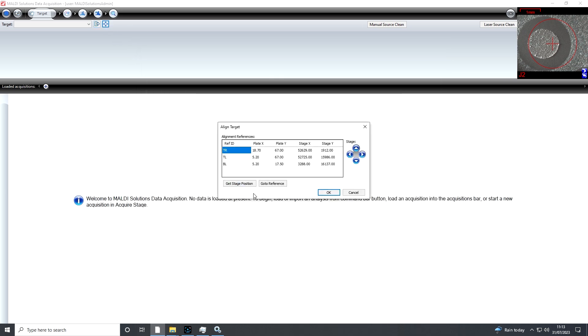Click Align Target. For each alignment reference, click Go to Reference and then align each well to the target in the image in the top right of the screen. Alternatively, you can use the cursor buttons to align the well to the target.